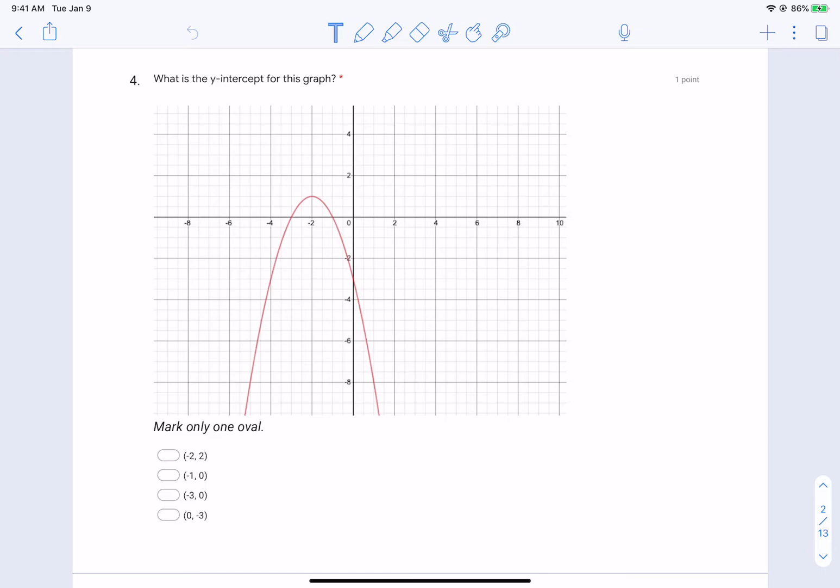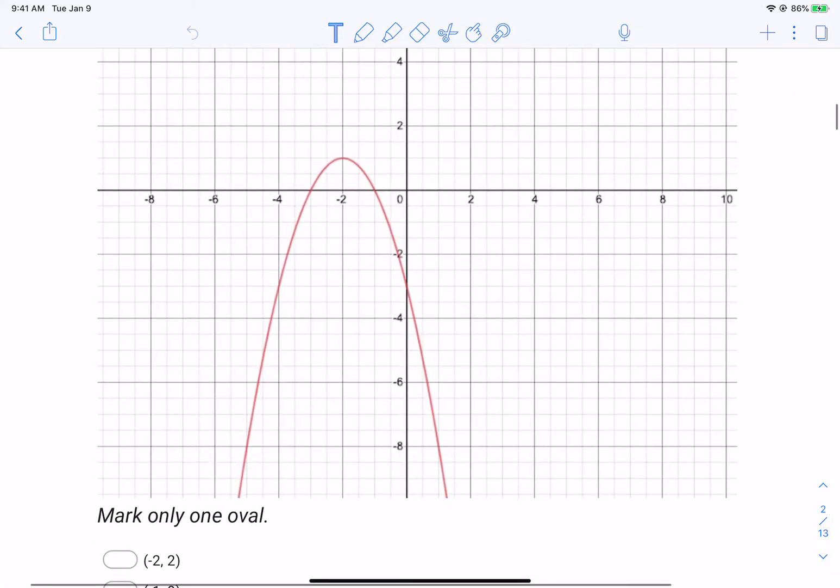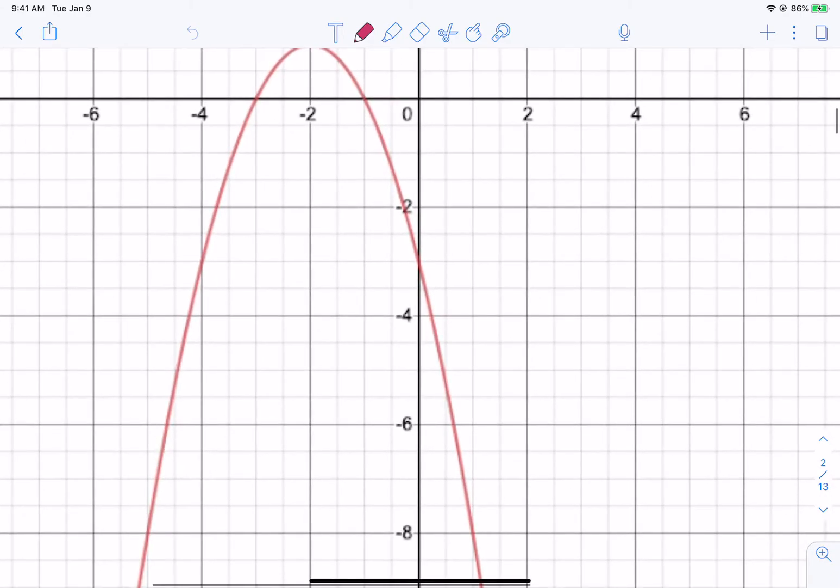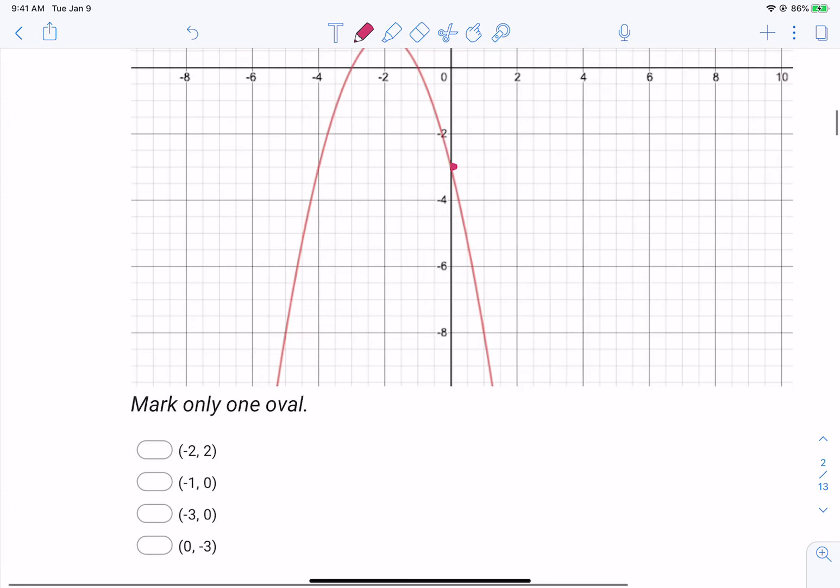It says here on question number four, what is the y-intercept for this graph? And so remember, your y-intercept is where you hit what? The y-intercept. It's where we hit the y-axis, right? So if you look, that's the point we're concerned with. So that is negative three, zero. So y-intercept, you hit the y-axis.